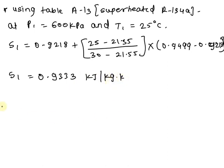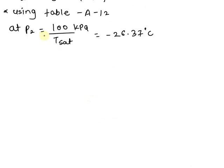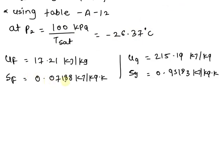Now S2 is equal to S1, so the value of S2 is equal to 0.9333 kilojoule per kg kelvin. Now second, using table A12, the pressure gives minus 26.37 degree celsius.